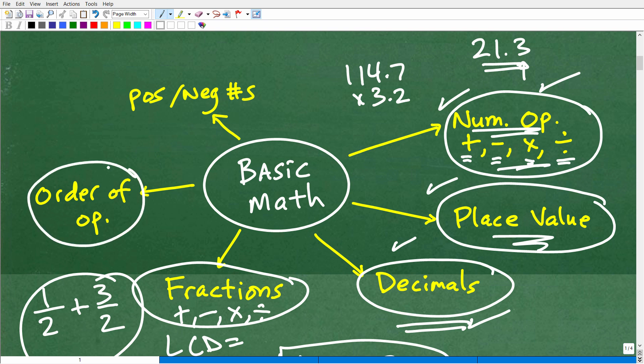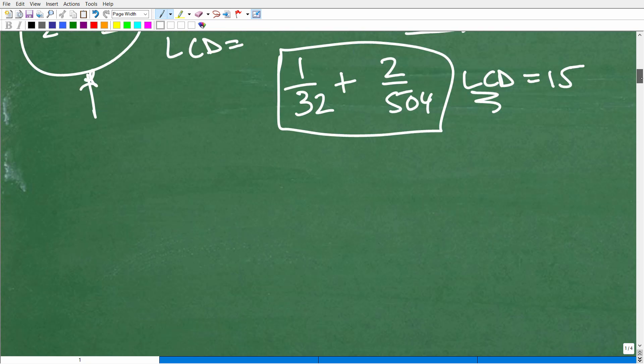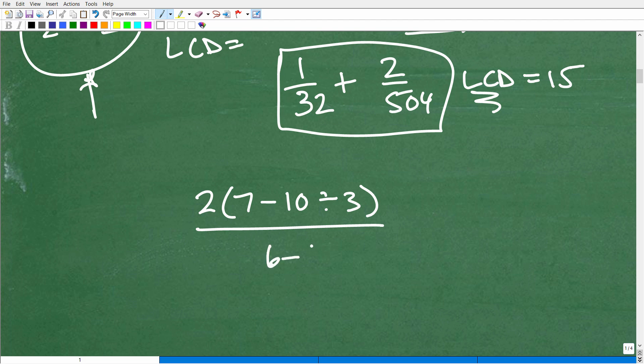The next thing I would say is the order of operations. This is this little acronym, PEMDAS, P-E-M-D-A-S. There's an old saying that says, please excuse my dear Aunt Sally, but this means something. And what it means is how we deal with a numeric expression.